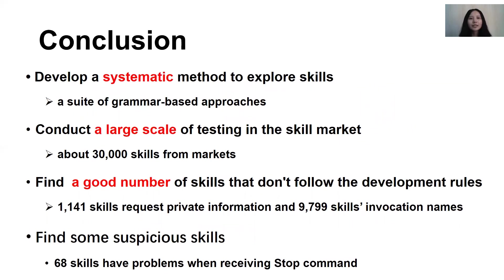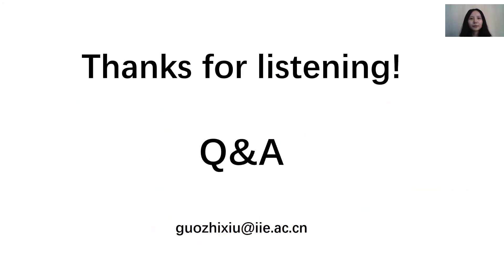Now I will summarize the work of our paper. First, we developed a systematic method to explore skills through a suite of grammar-based approaches. Second, we conducted a large-scale evaluation in the skill market — about 30,000 skills were evaluated. We also found a good number of skills that don't follow the development rules, and besides that, we found some suspicious skills. That's all. Thanks for listening. I will be happy to take any questions.